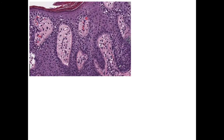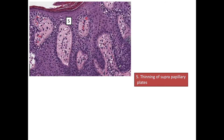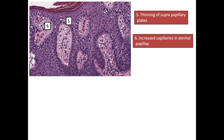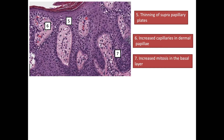The next important histopathological feature is thinning of the suprapapillary plates. The suprapapillary plate is the part of the epidermis above the dermal papillae, which gets thinned out in psoriasis. The next feature is increased capillaries in dermal papillae. The seventh important point is increased mitosis in the basal layer.